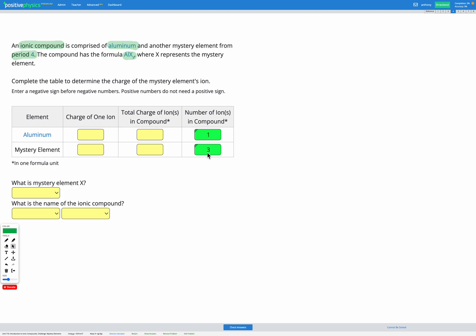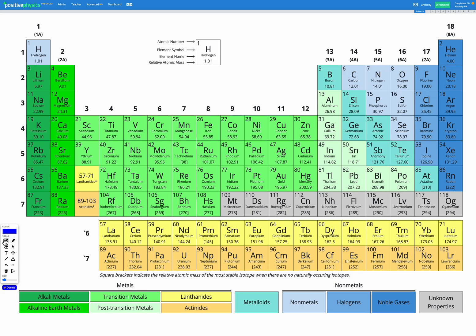Okay, now let's go and find out what we can from our periodic table. So let's find aluminium. Here's aluminium. It's in group 13. That tells us that it has a charge of three plus.